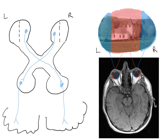Now let's draw ganglion cells from the temporal retina. Here in red is a ganglion cell that lives in the temporal retina. Temporal cells do not cross over — they remain ipsilateral. It synapses on a thalamic neuron which then projects to the visual cortex. Here's another one from the temporal retina of the left eye: its axon goes down through the optic nerve, chiasm, optic tract, onto a thalamic neuron which projects to the visual cortex.